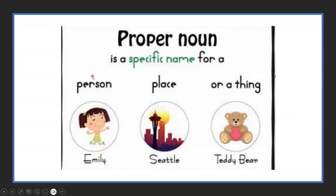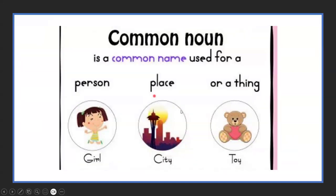Proper noun is a specific name for a person — like Emily. Emily is a proper noun. For a place — like Seattle. For a thing — like Teddy Bear. These are all specific names, so they are proper nouns.